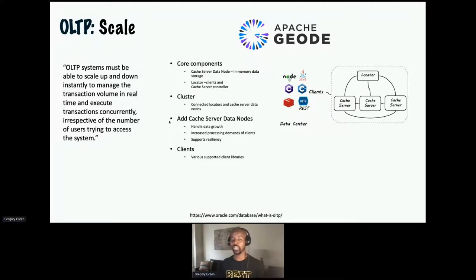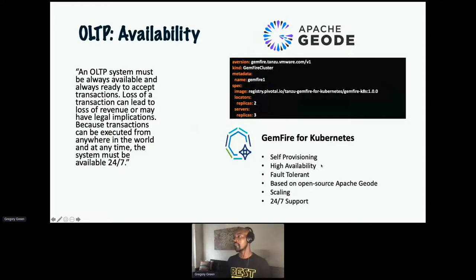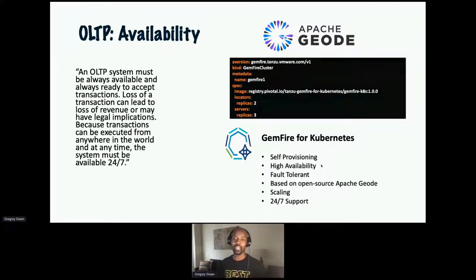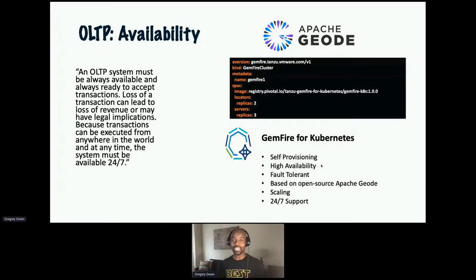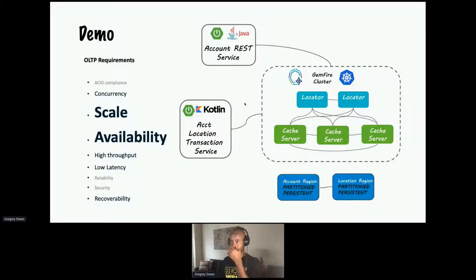For existing Redis applications, Geode has an experimental Redis adapter, so your Redis applications can talk to an Apache Geode cluster transparently. Regarding availability — especially for financial applications like ATM transactions — at VMware we provide a Kubernetes operator for Apache Geode that makes it easy to provision and maintain high availability and fault tolerance for your deployments. You declare the state of your clusters, even fairly large clusters, with just a YAML definition. Let's demonstrate scale and availability.